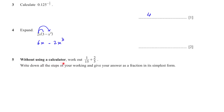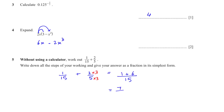Question 5: Without using a calculator, work out 1/15 + 2/5, showing all working. For fraction addition or subtraction, the first thing you must do is make the denominators the same. We know 5 × 3 = 15, so we multiply the denominator by 3 and therefore multiply the numerator by 3 as well. This gives us the same denominator, so we write it as a single fraction: 1 + 6 = 7, giving 7/15.